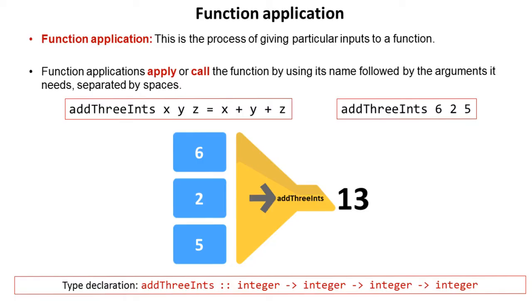We see here a function called addThreeInts and we supply it with three inputs: six, two, and five, and then it produces an output.